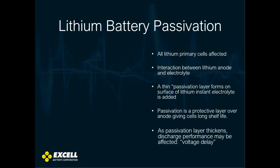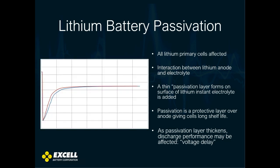As it thickens over time, discharge performance may be affected, and this is what we call voltage delay. This shows how a voltage will drop right when a load is applied to a cell, and the time it takes for it to recover to a normal operating voltage. This is called voltage delay.